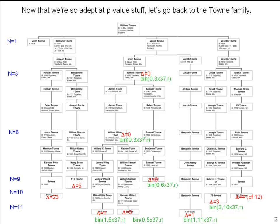Let's have another look back at the Towne family. You'll recall that we have a genealogy that shows a number of descendants of William Towne through nine, ten, and as many as eleven generations.